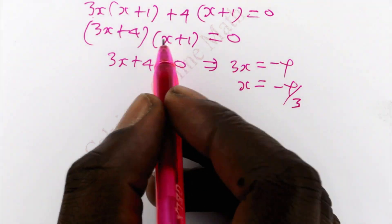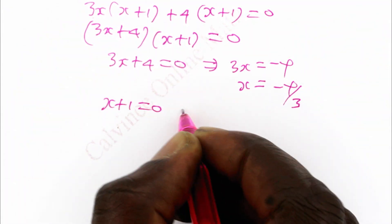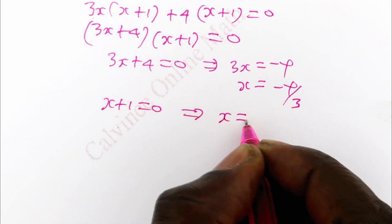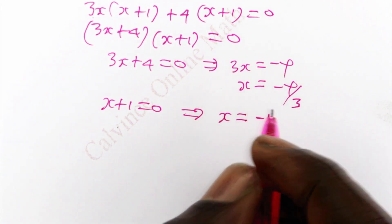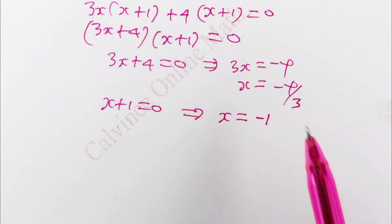Or it could also mean that x plus 1 is equal to 0, so that x is equal to negative 1. So the value of x is either negative 4 over 3 or negative 1. Thank you for watching. Please subscribe.